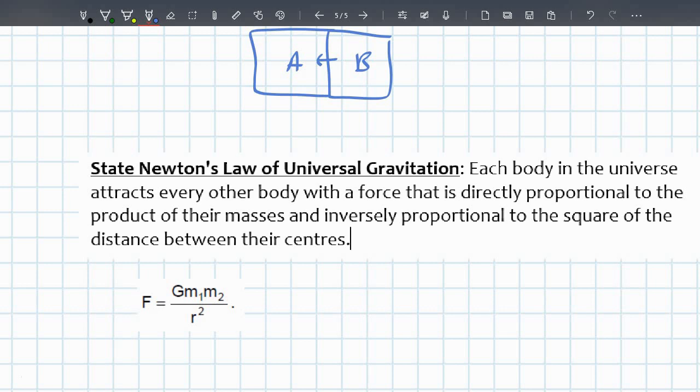Some of the keywords here, or something that can get students confused or can forget, is that it's the product of the masses. There's M1 and M2. So it's a product of two masses.